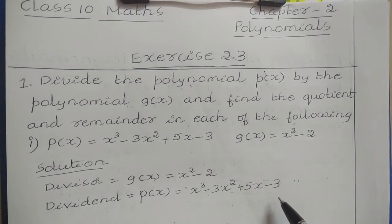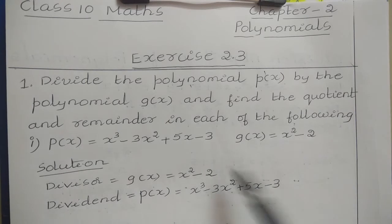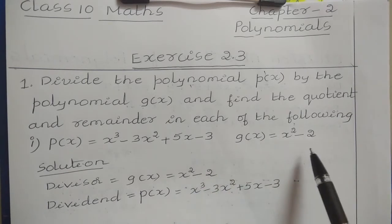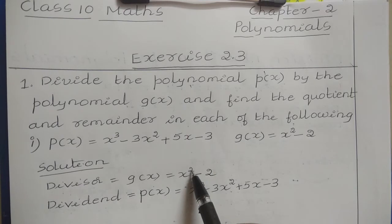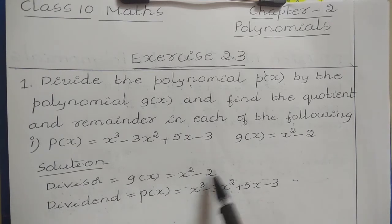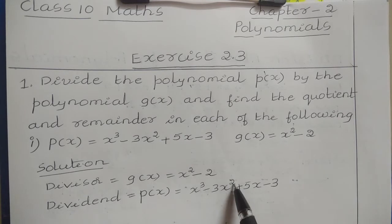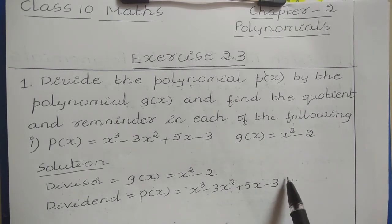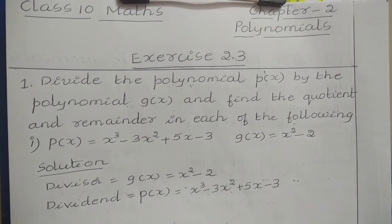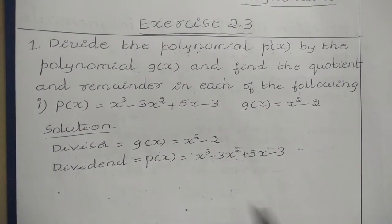That means the highest degree term has to come first. Here the values are already arranged. For the divisor, the first degree is 2, then 0 — already in decreasing order. For the dividend, we have degrees 3, 2, 1, and 0 — also already in decreasing order. So no arrangement is needed. Now let us start the division process.